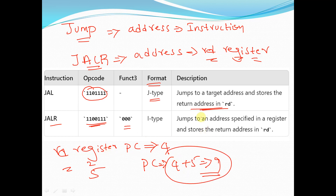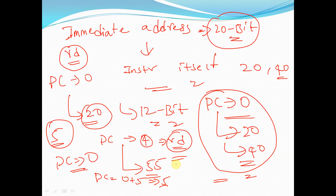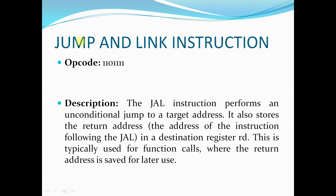In the case of JAL, if the immediate value is 5 and the program counter is at address 0, the PC becomes 0 plus 5, going to address location 5. JAL performs an unconditional jump to a target address — there is no condition like a while loop or if-else. It also stores the address of the instruction following the JAL in the destination register Rd. This is typically used for function calls when the return address is saved for later use.